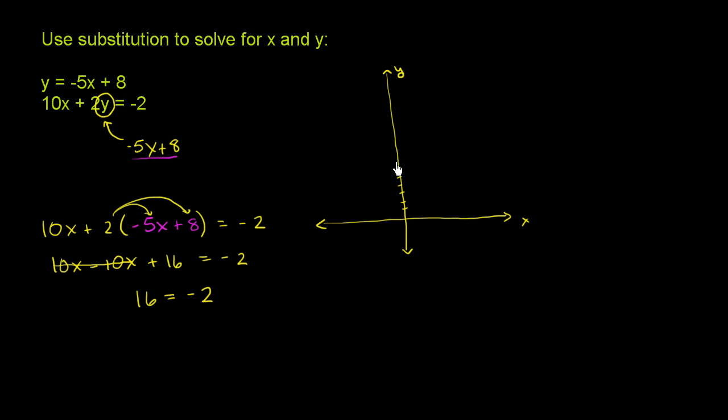So 1, 2, 3, 4, 5, 6, 7, 8. And then it has a very steep downward slope. Every time you move forward 1, you have to go down 5. So it looks something like that.